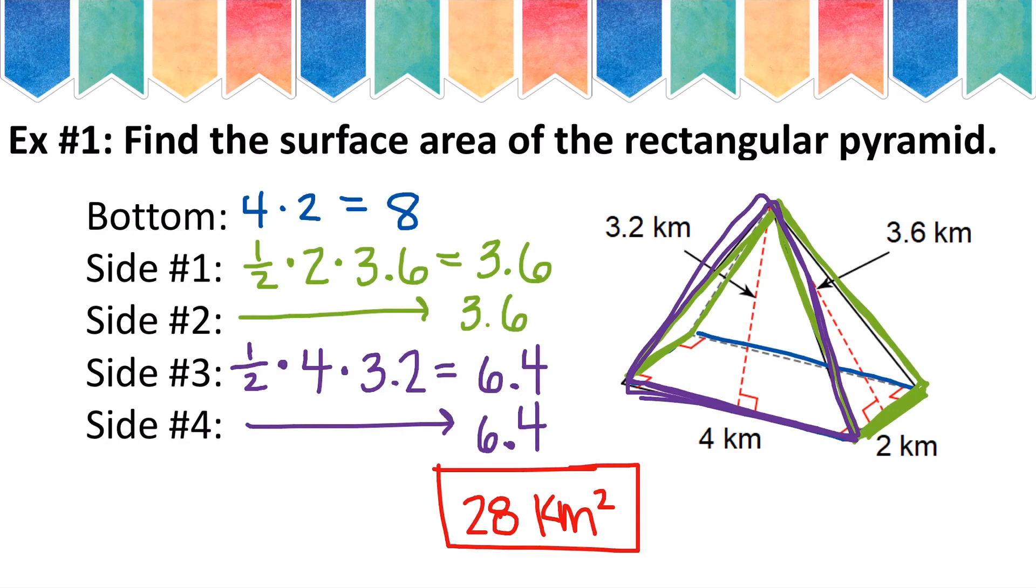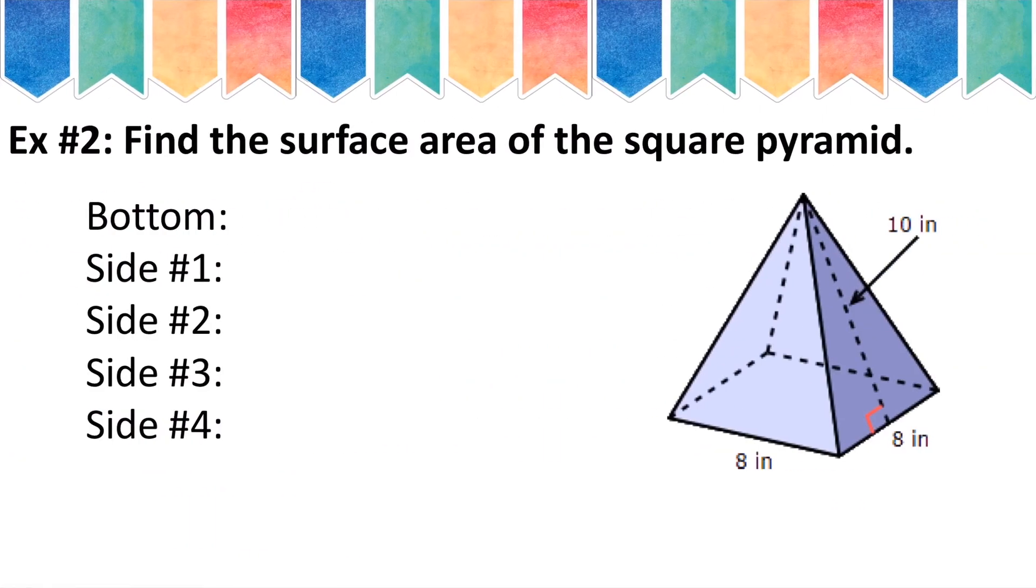Let's look at one more example. Again, I'm going to start with the bottom, which in this case is a square instead of a rectangle. So I'll take 8 times 8, which is 64.